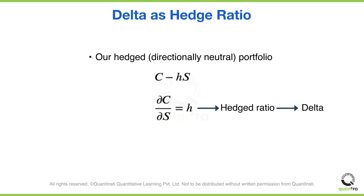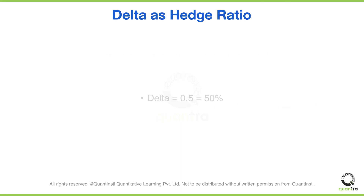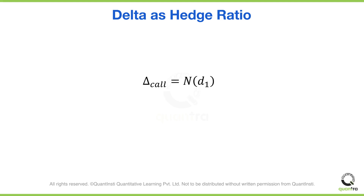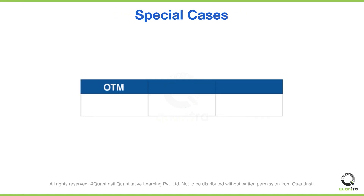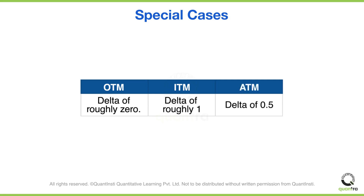Delta is expressed either as a decimal or as a percentage. The equation for call delta is shown on the screen. As puts increase in value when the stock goes down, they have negative deltas. We can differentiate the put-call parity equation to show the relationship between the deltas of puts and calls of the same strike and expiration. There are a few special cases you should be aware of. Very far out of the money options have deltas of zero. Very far in the money calls have a delta of one, and puts have a delta of negative one. At the money, options have deltas close to 0.5 for calls and minus 0.5 for puts.